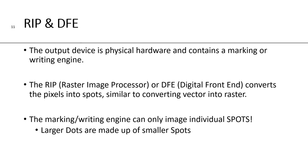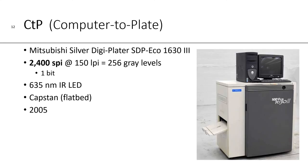To create that spot, the output device contains a marking or writing engine. The RIP — the raster image processor — or the DFE, the digital front end, is going to convert the pixels into spots, similar to what it does when it converts vector into raster. The marking or writing engine can only image individual spots, and the larger dots are made up of smaller spots. An example of an output device that uses spots per inch would be computer-to-plate, CTP.